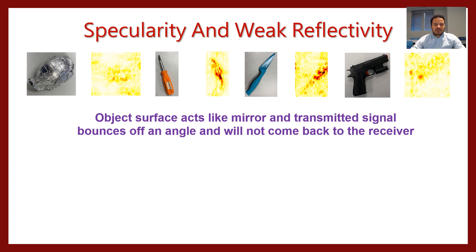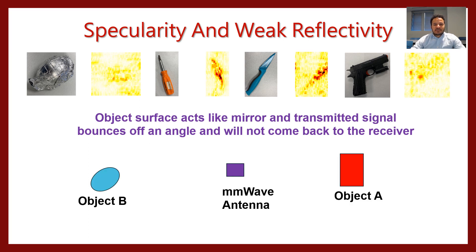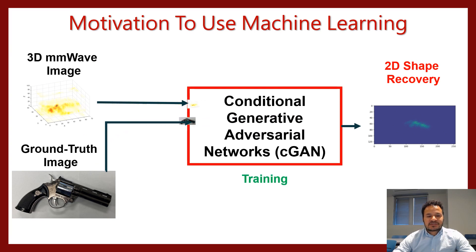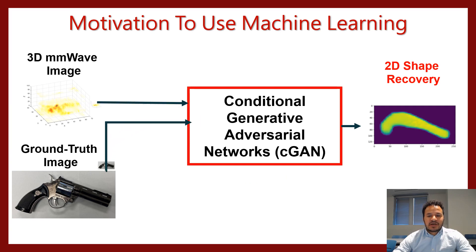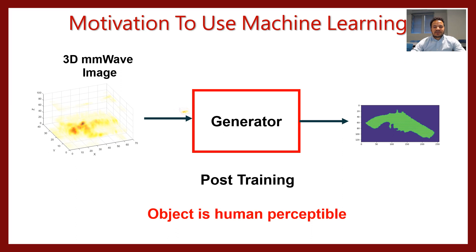Another challenge to solve is the specularity of Millimeter Wave and the weak reflectivity of the object. This happens because the object surface acts like a mirror and the transmitted signal bounces off at an angle and will not come back to the receiver, as shown in the object view. The top figures show different objects with the corresponding Millimeter Wave where we are missing most of the surfaces. To solve this challenge, we use a machine learning technique where we pass the low-resolution Millimeter Wave image with corresponding ground truth to conditional generative adversarial networks, which learn from 1000 samples during training to produce the improved shape as seen on the right side. After training is done, we only need the trained generator and the low-resolution Millimeter Wave 3D image to produce the high-quality 2D shape, which is human perceptible.